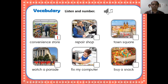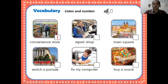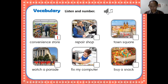Unit 1: Where is this place — listen and number. Number 1: convenience store. Number 2: buy a snack. Number 3: repair shop. Number 4: fix my computer. Number 5: town square. Number 6: watch a parade.